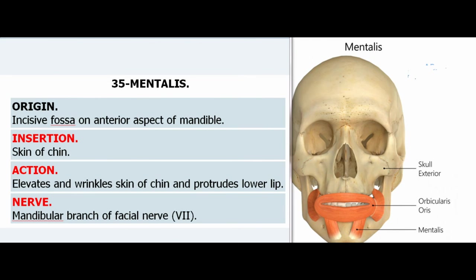35. Mentalis. Origin: Incisive fossa on anterior aspect of mandible. Insertion: Skin of chin. Action: Elevates and wrinkles skin of chin and protrudes lower lip. Nerve: Mandibular branch of facial nerve (VII).